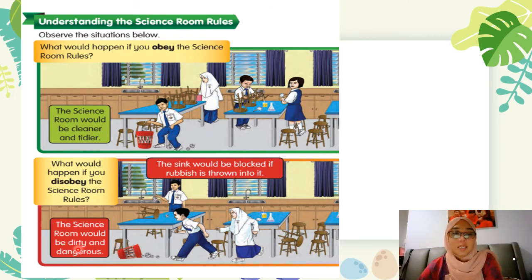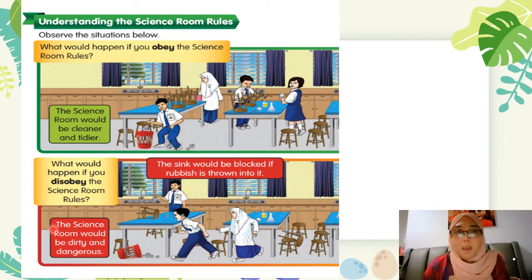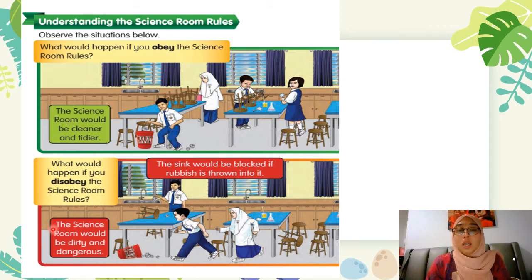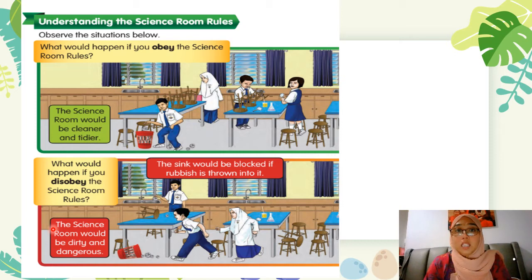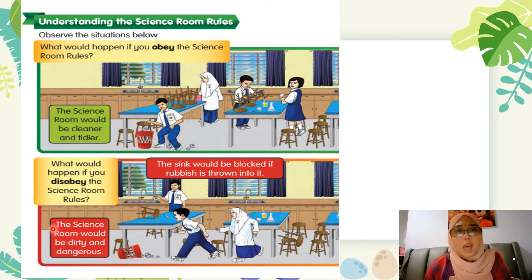The science room would be dirty and dangerous. Bilik sains akan menjadi bahaya. Cuba awak tengok di dalam gambar itu — bakul sampah bersepah. Murid yang berlari mungkin akan tersepak tong sampah tersebut dan terjatuh, dan bila terjatuh selalunya kita akan tercedera. Jadi, jika kita ikut peraturan, bilik sains akan lebih kemas, lebih bersih, lebih teratur, kita selamat dan tidak dapat cedera. Tetapi kalau kita tidak ikut peraturan sains, mungkin ada murid yang akan tercedera, makmal sains akan lebih kotor, lebih bahaya, sinki tersumbat, air melimpa. That's why the science room rules are very important.